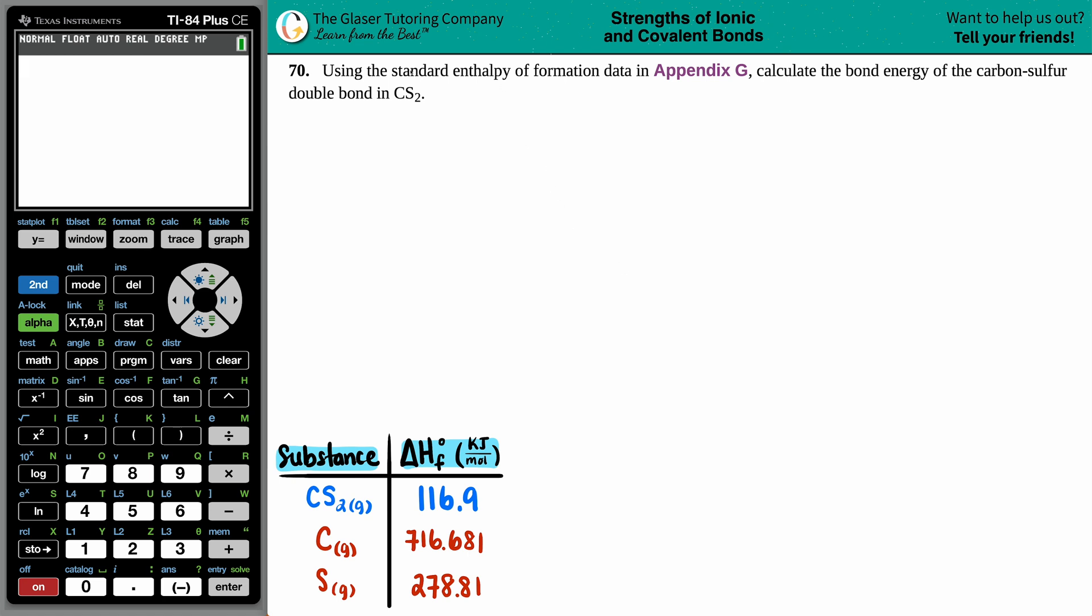Number 70, using the standard enthalpy of formation data in Appendix D, calculate the bond energy of the carbon sulfur double bond in CS2. Alright, so the only thing that we're allowed to use are those standard enthalpy of formation values. These can be found in the back of a textbook, so that's exactly what I did. I went in the back of a textbook to find the numbers that we're going to use for this problem, and we need to calculate the bond energy of CS2.